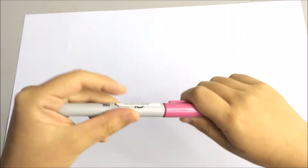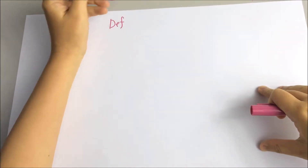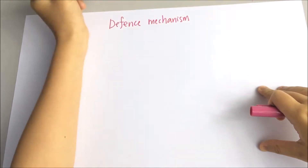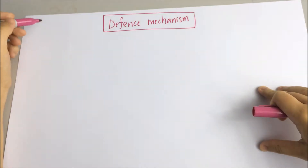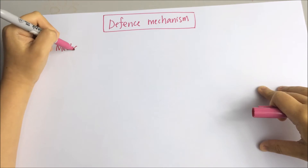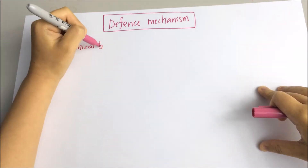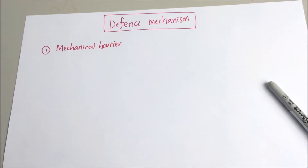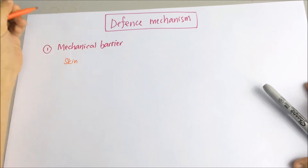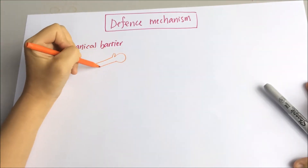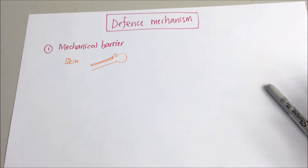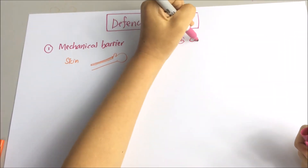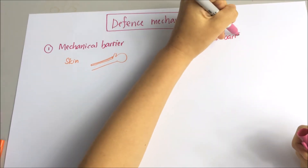What's standing in the way of pathogens spreading infection is our body's immune system. Let's look at a few examples of defense mechanisms. The first one would be mechanical barrier. Skin is a very good example because it consists of dry and dead outer cells that make it difficult for microbes to penetrate.